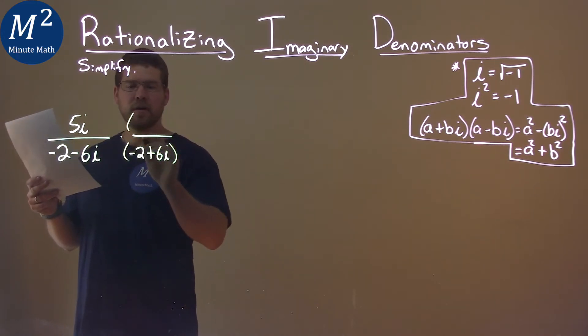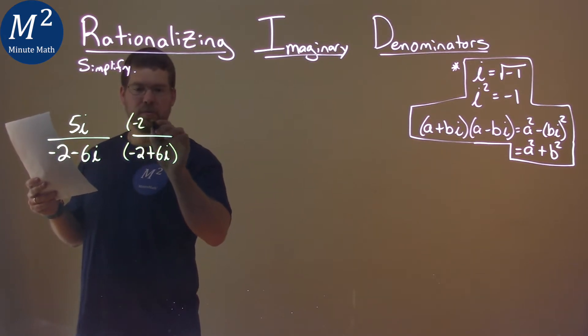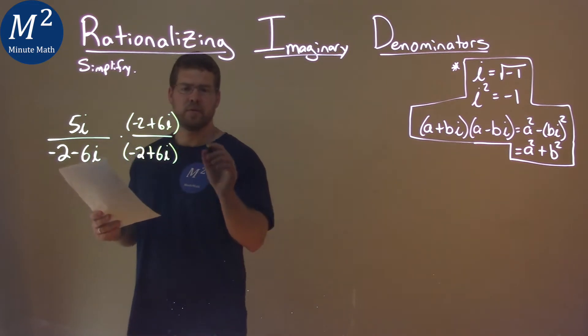And we're going to multiply this fraction by this number, negative 2 plus 6i over itself. And what happens when we do that?